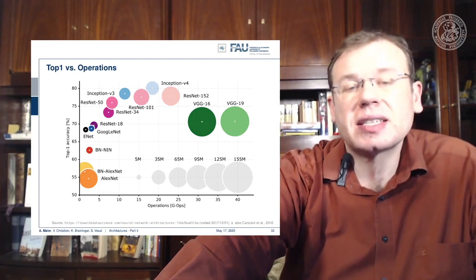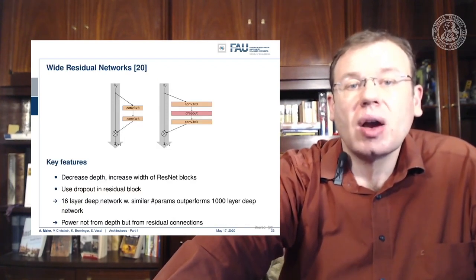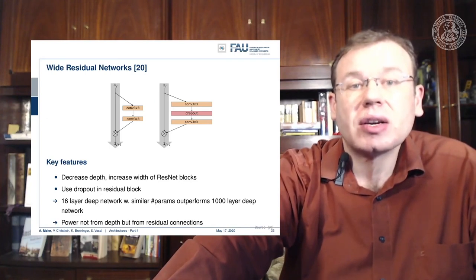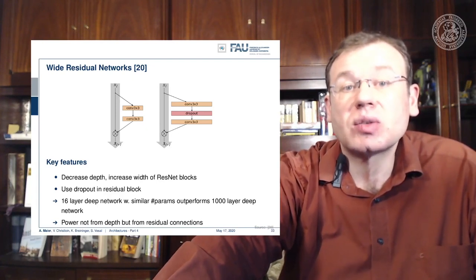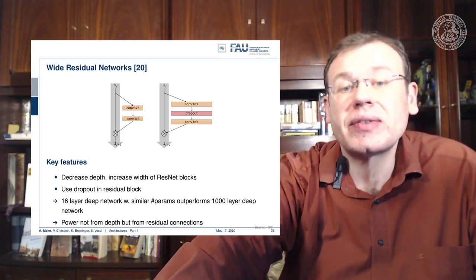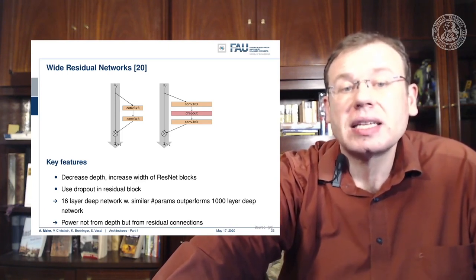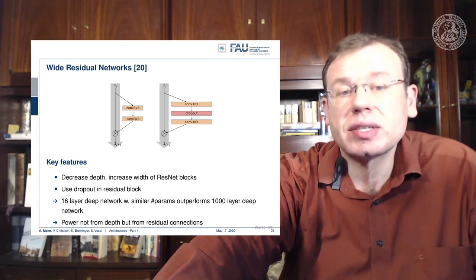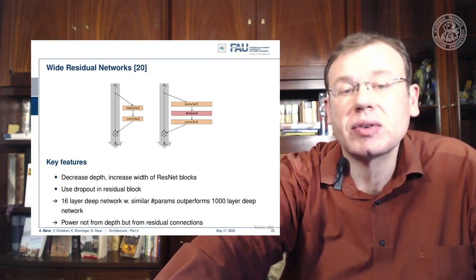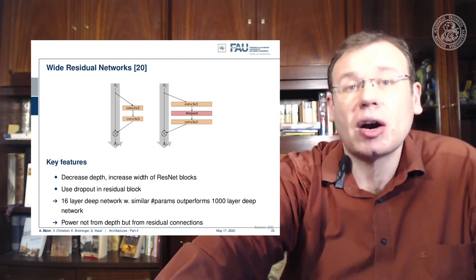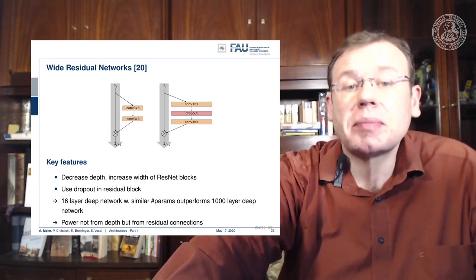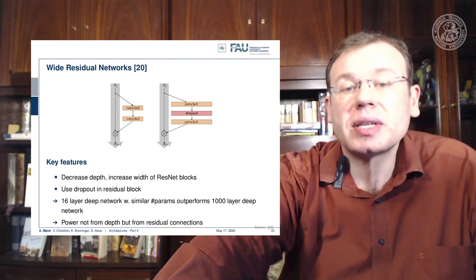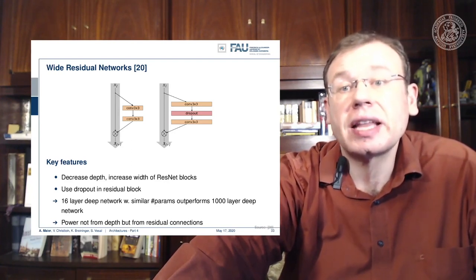What other recipes can help you build better models? One thing that has worked quite successfully is increasing the width of residual networks. Wide residual networks decrease the depth but increase the width of the residual blocks, and they also use dropout in these residual blocks. You can show that a 16-layer deep network with a similar number of parameters can outperform a 1000-layer deep network. The power here is not from depth, but from residual connections and the introduced width.